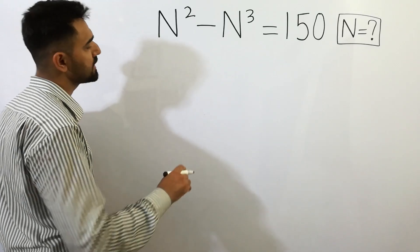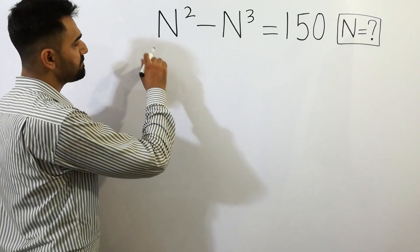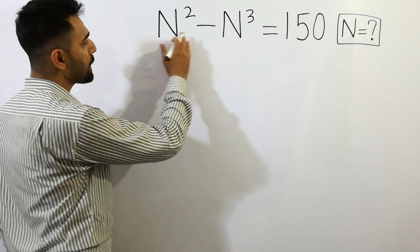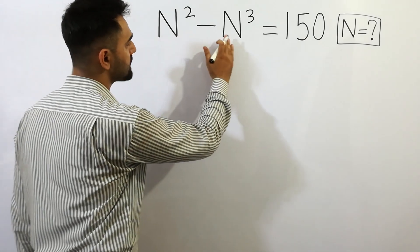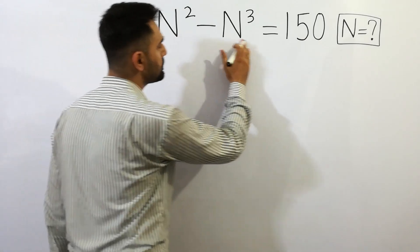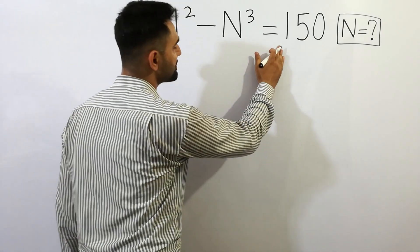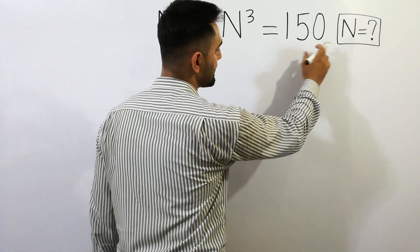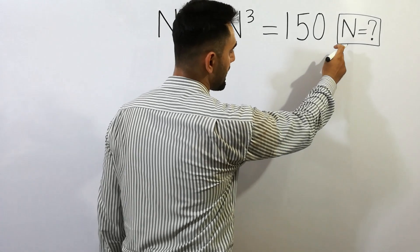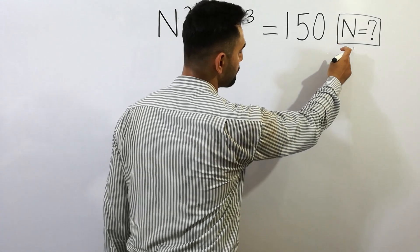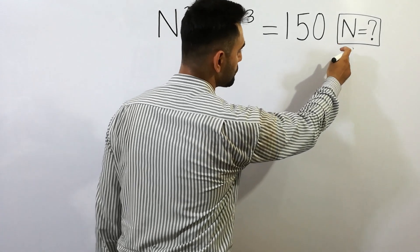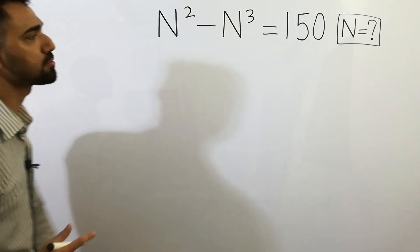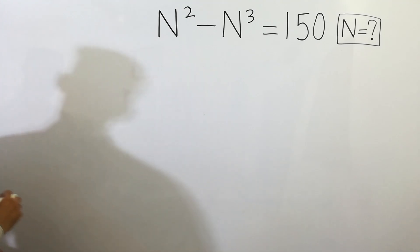Friends, if we have n squared minus n cubed equals to 150, then how to find the value of n? Let's have a solution here.